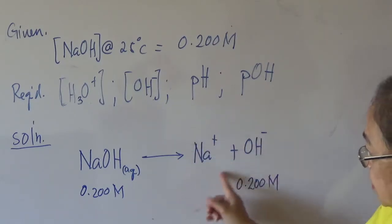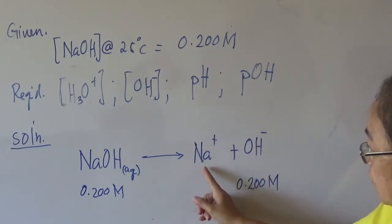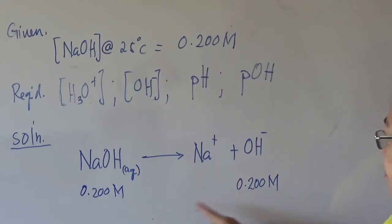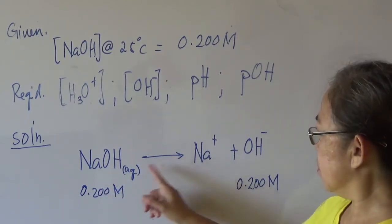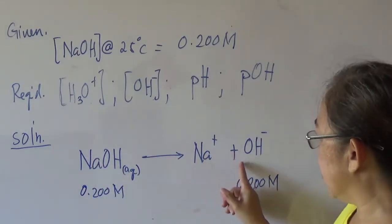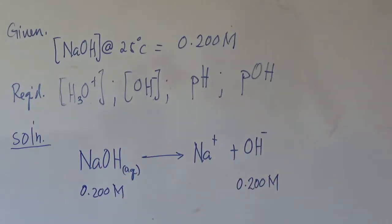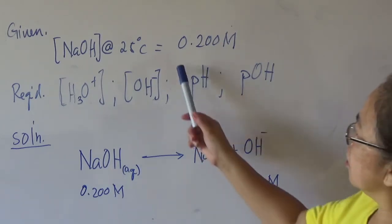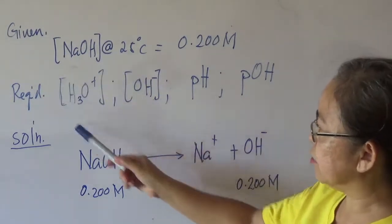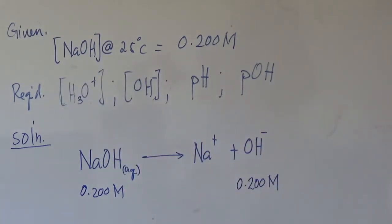If you are going to determine the concentration of sodium ion, that is also 0.2 molar — balanced at one mole to one mole to one mole. Now, one of the unknowns is the concentration of the OH⁻ ion, then the hydronium ion, so we will solve first for the OH⁻ ion.